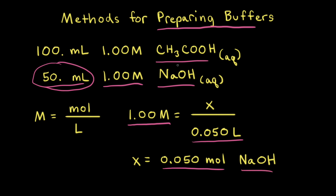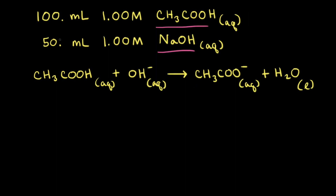Since sodium hydroxide is a strong base, it dissociates completely in solution. Therefore, if we have 0.050 moles of sodium hydroxide, we also have 0.050 moles of sodium cations and 0.050 moles of hydroxide anions in solution. When these two aqueous solutions are mixed, we're combining 100 milliliters with 50 milliliters for a total volume of 150 milliliters.